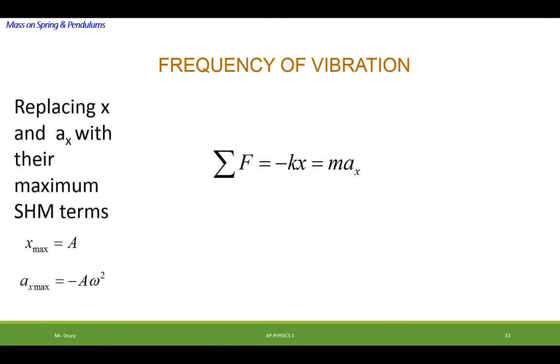Here's our equation again. And now we're going to replace x and ax, or acceleration of the x, with the maximum simple harmonic terms. From the previous video, you know that acceleration maximum is just equal to the amplitude. Excuse me. Displacement maximum is equal to the amplitude. And acceleration maximum is equal to minus A omega squared.